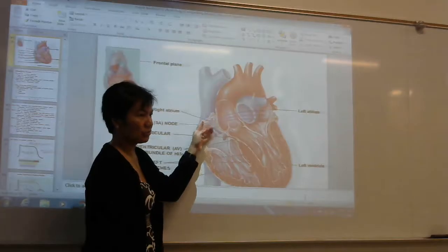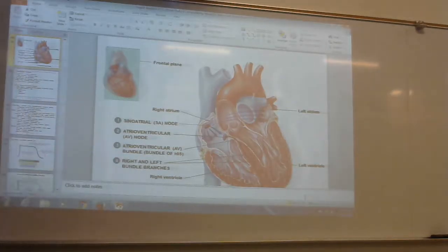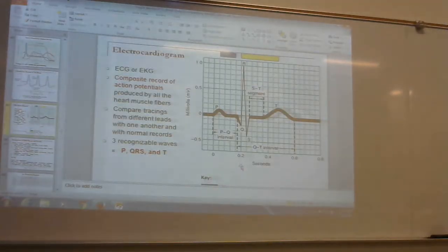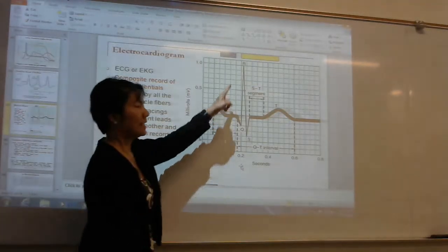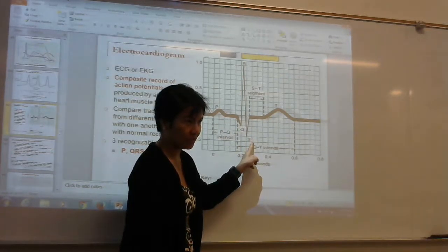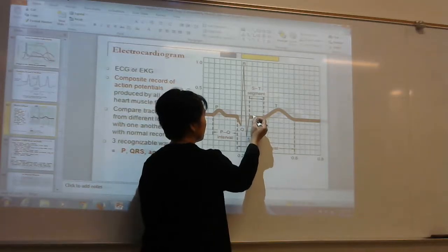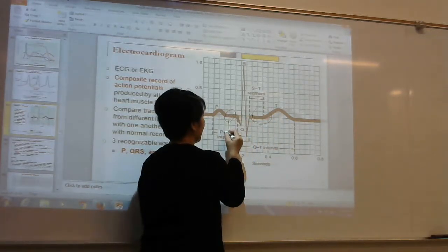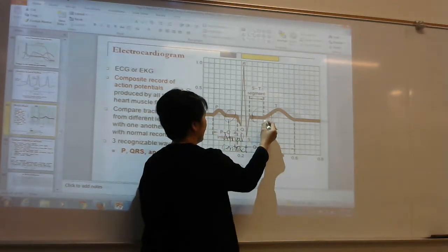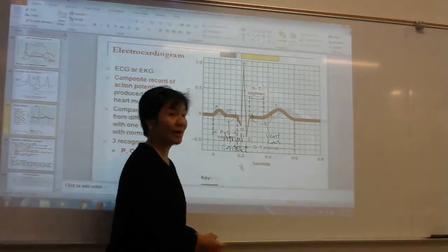Then the ventricles will fire — this is the QRS wave. The QRS represents ventricular depolarization. When you stimulate the ventricles, the ventricles will contract. So contraction happens around the QRS. Here is atrial contraction, and here is the ventricle contracting after the QRS wave.